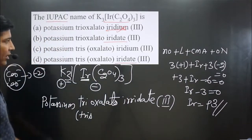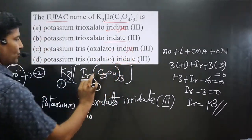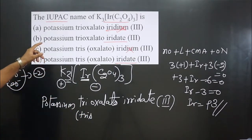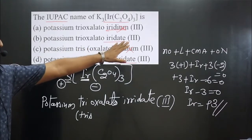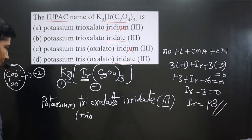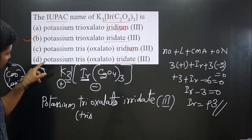In the third option we have iridium. That is also not correct. So any of these two can be correct. See, we have potassium tri-oxalato iridate three. Potassium tri-oxalato iridate three. So option B is making sense.